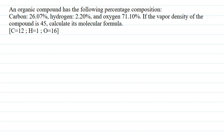Hello students, I will be your teacher for this video. The question says: an organic compound has the following percentage composition — carbon 26.07%, hydrogen 2.20%, and oxygen 71.1%. If the vapor density of the compound is 45, calculate its molecular formula.